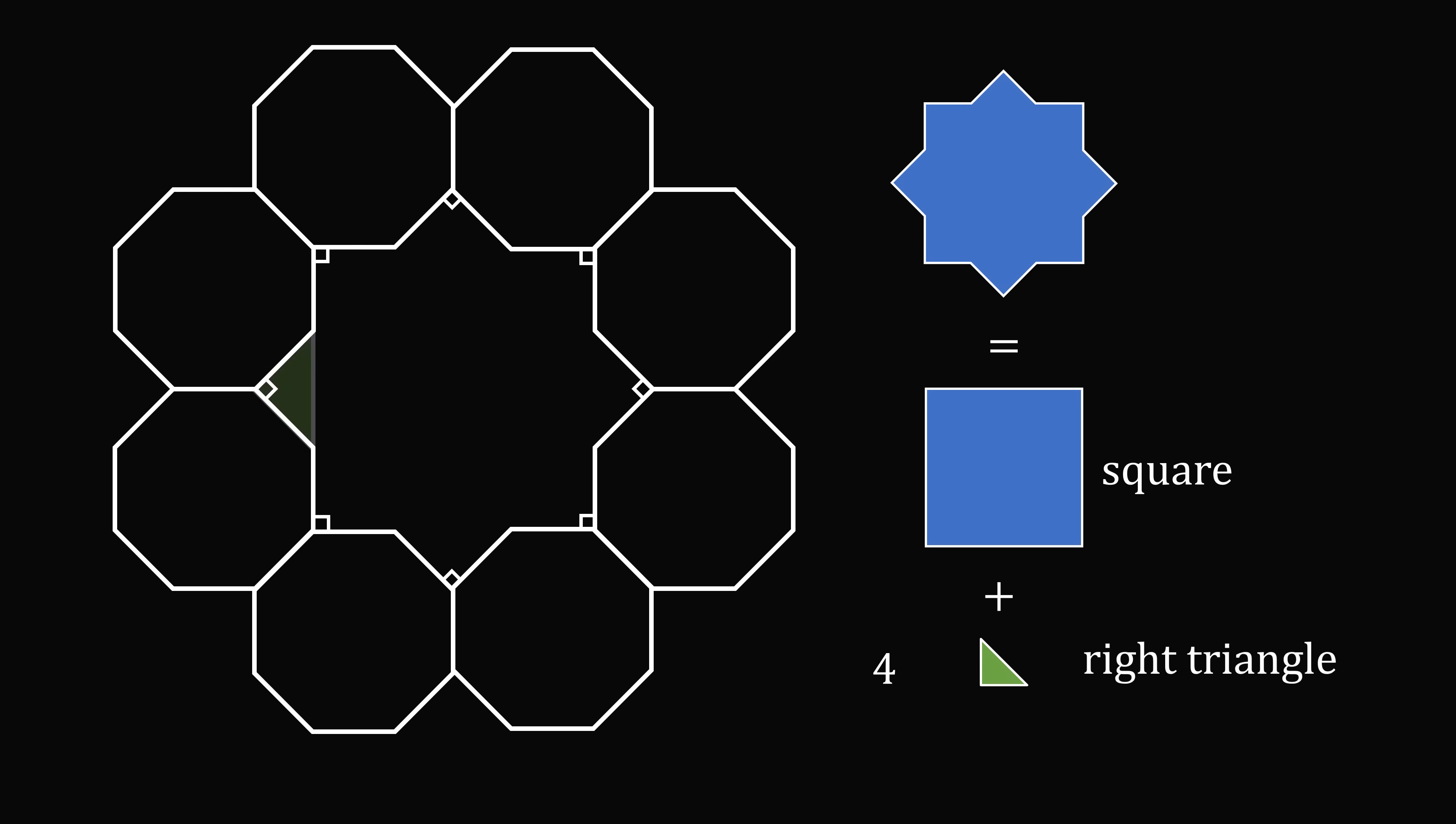They're isosceles right triangles. So each leg of this right triangle is a side of the octagon, so it has length equal to x. The hypotenuse of this right triangle is equal to the square root of x squared plus x squared, which is equal to x root 2.